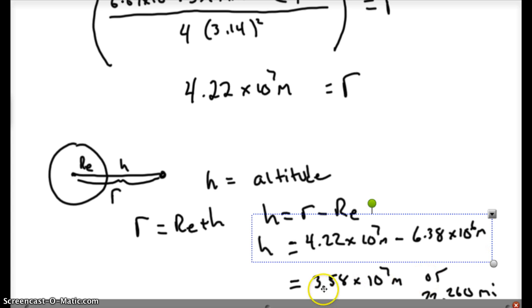And in this case, for a geosynchronous satellite, you end up with 3.58 × 10⁷ meters, or 22,260 miles.